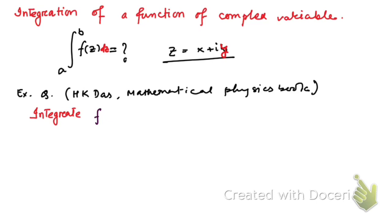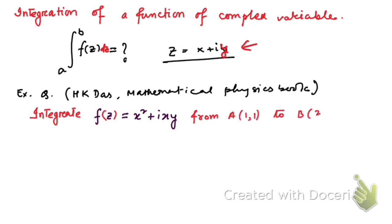The question is: integrate f(z) = x² + ixy, which is a function of complex variable z, from point A (1,1) to point B (2,8). Integration of a complex variable may be path dependent, so two paths are given.